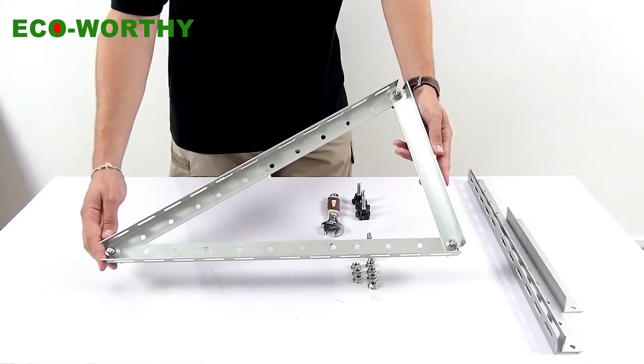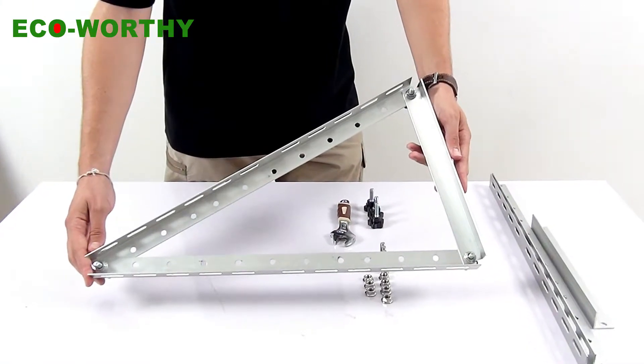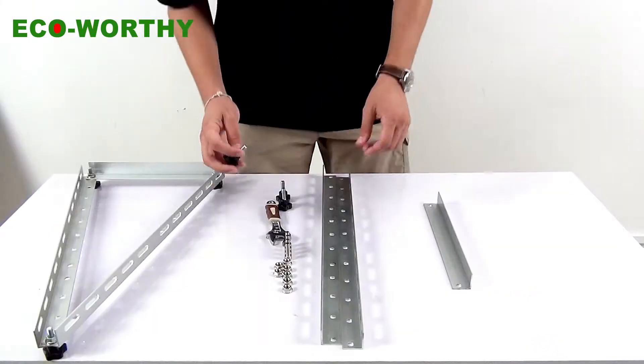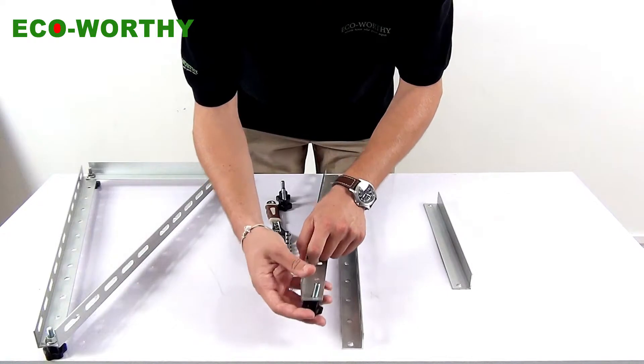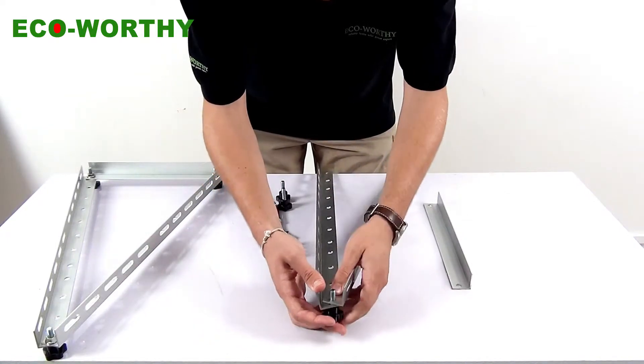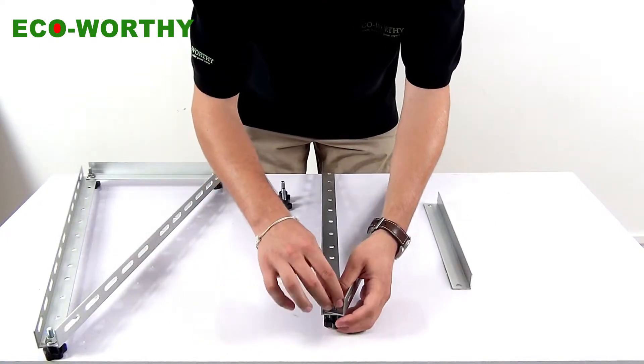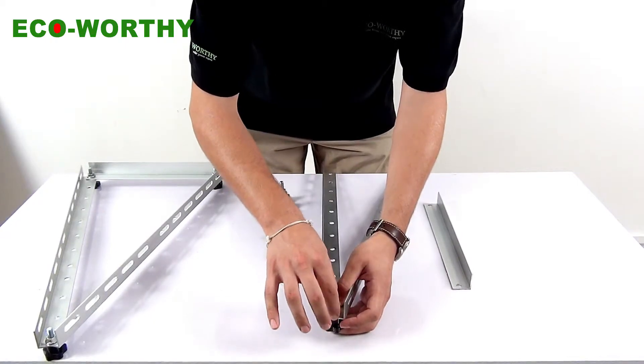Here we have a complete set of two rails together. Let's assemble the other one in a different angle so we'll have an intuitive contrast.